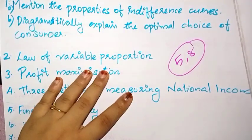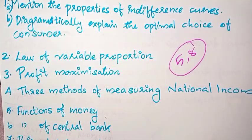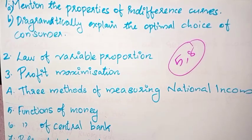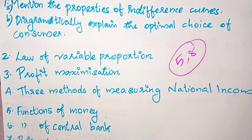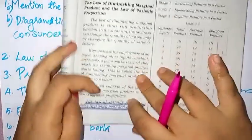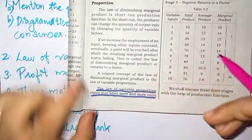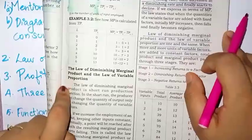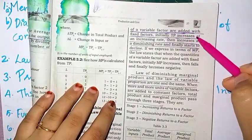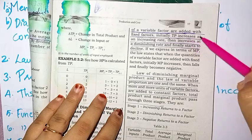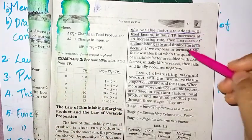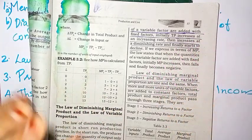Next is the Law of Variable Proportion. In Microeconomics, the third chapter is the Law of Variable Proportion. The Law of Variable Proportion states that when more and more units of variable factors are added with the fixed factor, initially TP increases at an increasing rate, then increases at a diminishing rate, and finally starts to decline.